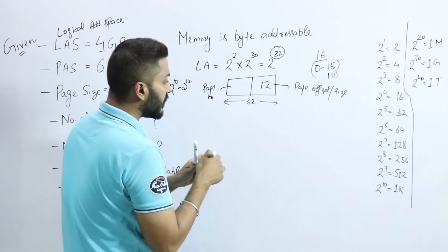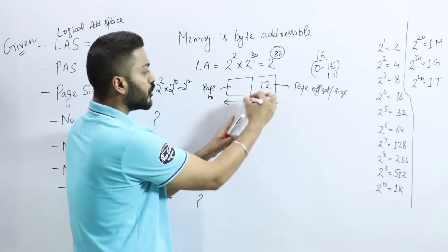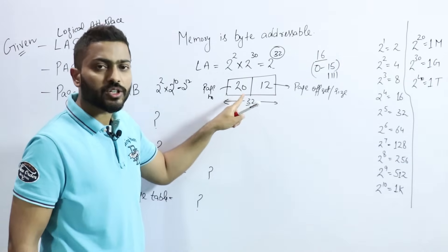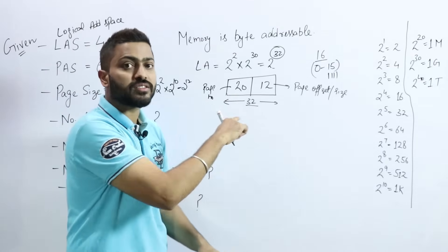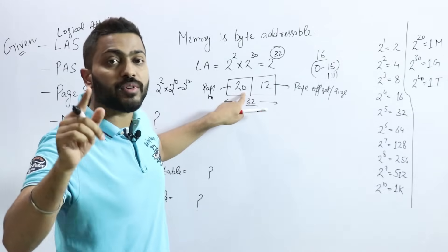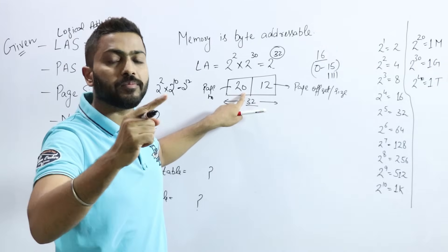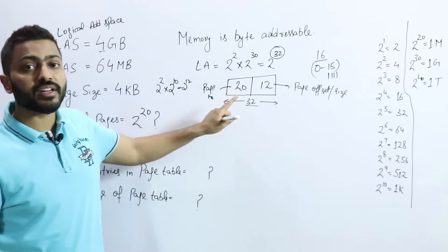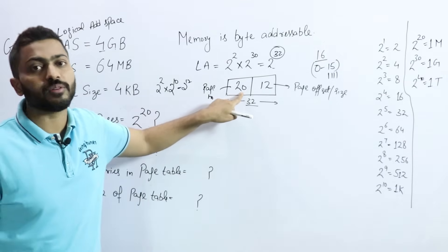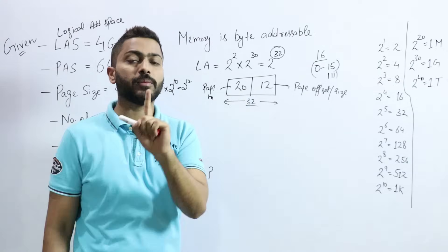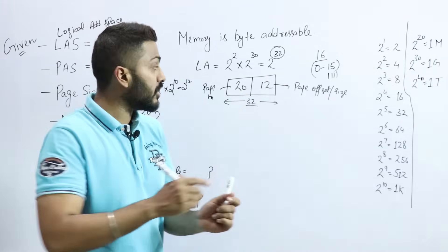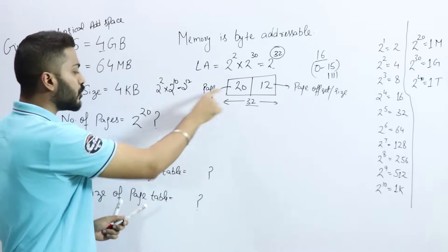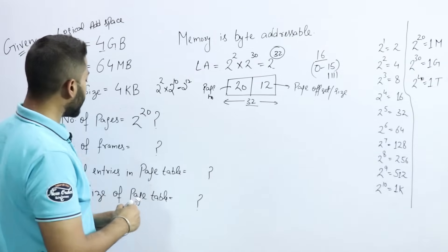Now we know: total logical address = 32 bits, and 12 bits are taken by the page offset. So the remaining bits for page number = 32 - 12 = 20 bits. This solves the first question — number of pages. Note: 20 is the number of bits, not the number of pages. Actual number of pages = 2 raised to power 20. Be careful in exams — 20 might appear as an option, but the answer is 2^20.